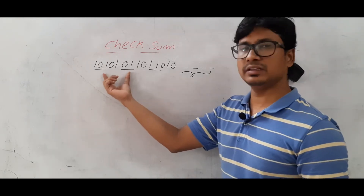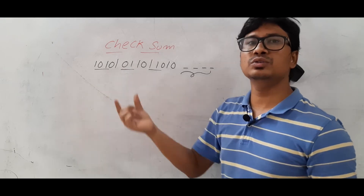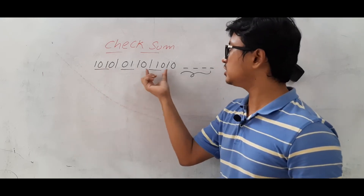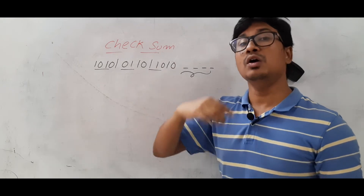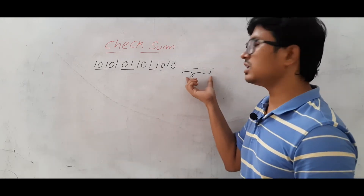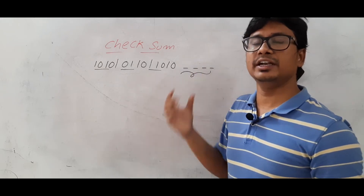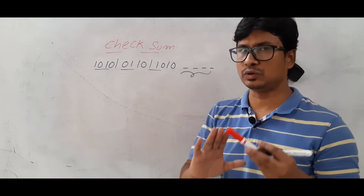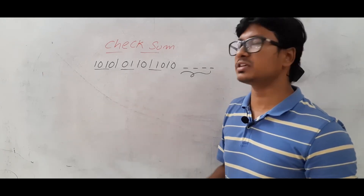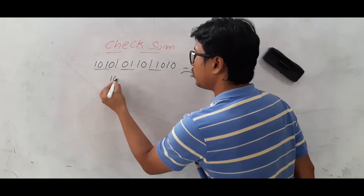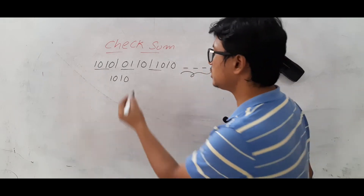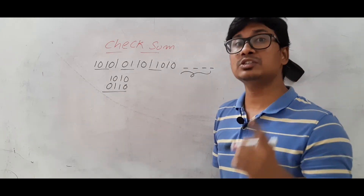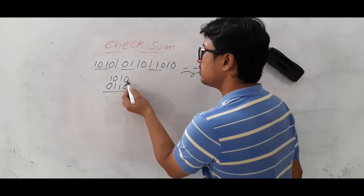We have to perform addition between all the blocks of data using ones complement addition. First you perform the binary addition of all the blocks, then compute the ones complement of the result — that result acts as the redundant bits. So for our example, I need to perform the addition between 1010 and 0110 using ones complement addition.